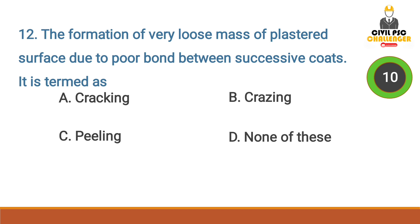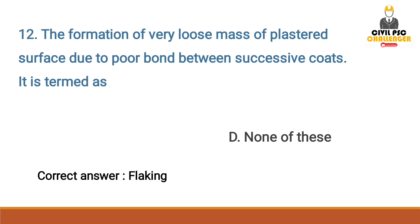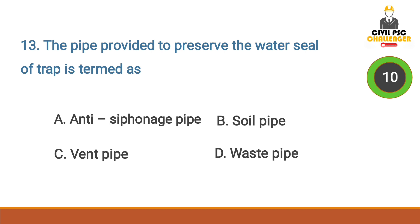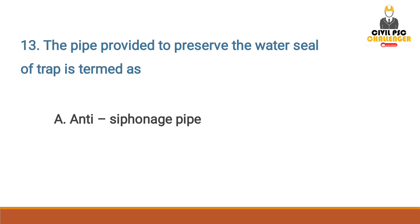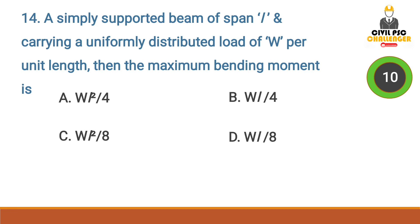Answer option B: barium plaster. Next question: the formation of a very loose mass of plastered surface due to poor bond between successive coats is termed as — answer option D: none of these; correct answer: flaking.